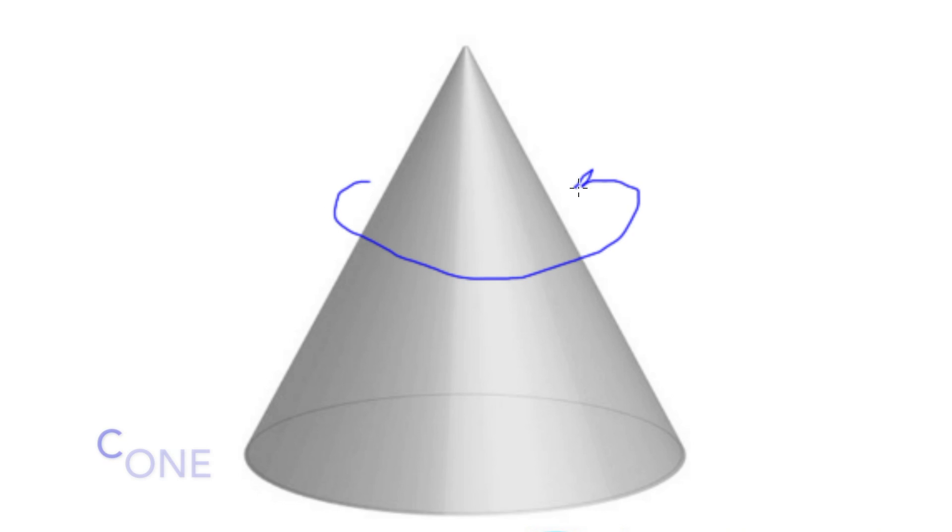When it comes to counting the faces on a cone, we can see again, like the cylinder, there's one plane that goes round with no edges to divide it, and a face on the bottom.